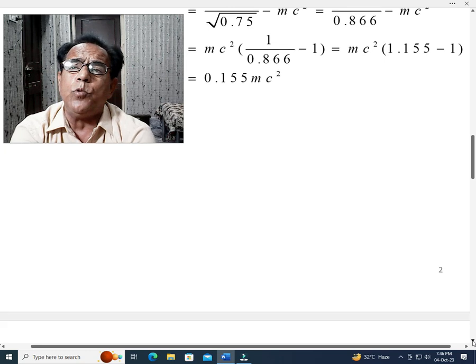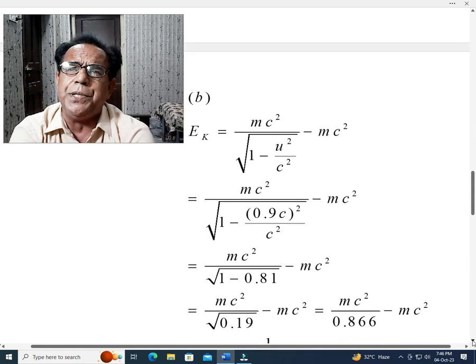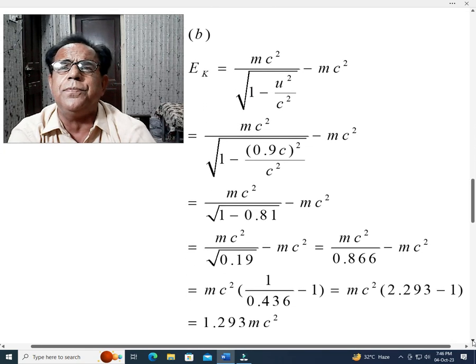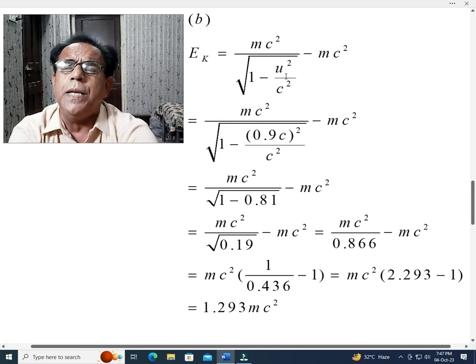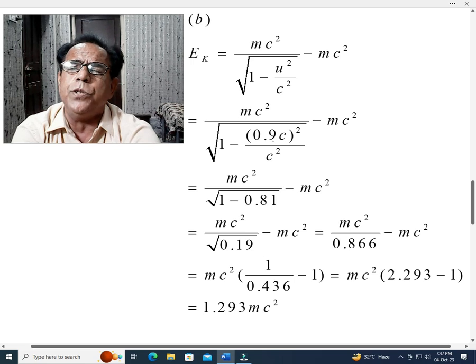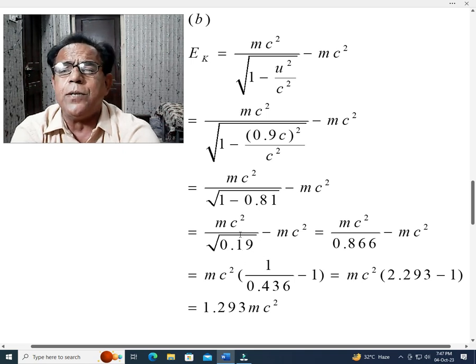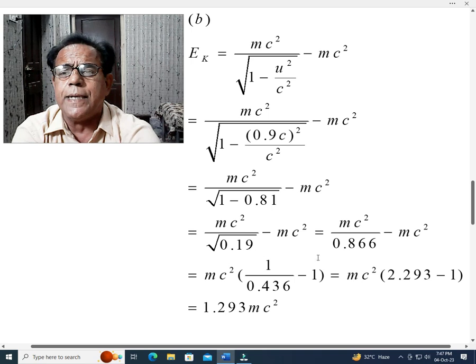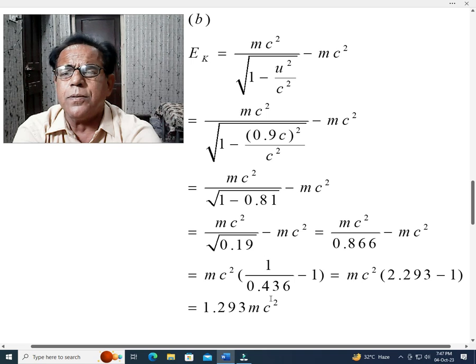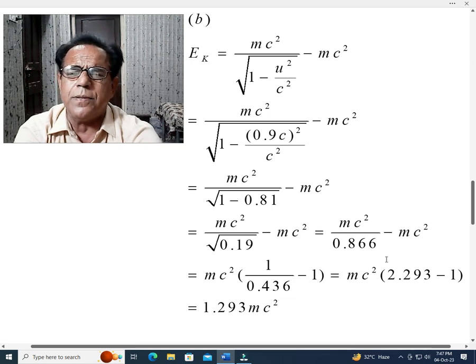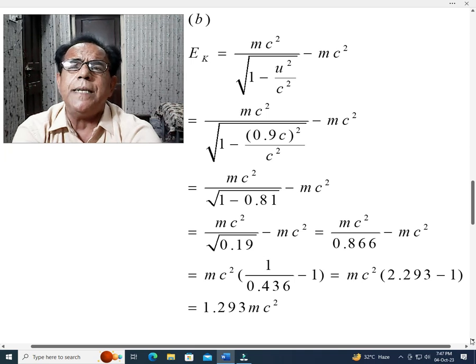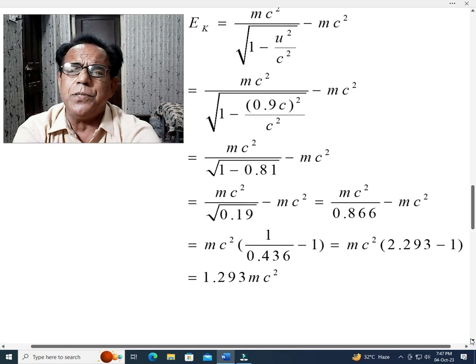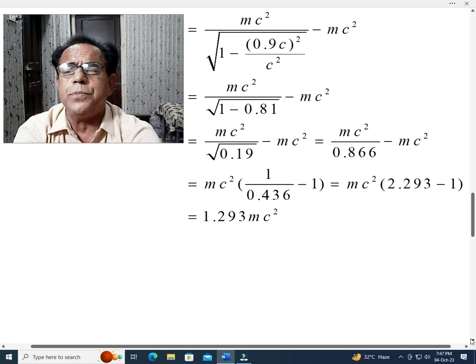Now, we come towards part b and c which are just repetition of this part with minor changes. Here in place of 0.5, 0.9 is used. And we know that square of 0.9 is 0.81, and when subtracted from 1, it becomes 0.19. And when square root of 0.19 is taken, it becomes 0.436, and when divided, it becomes 2.294. In this case, kinetic energy becomes equal to 1.294 mc squared.